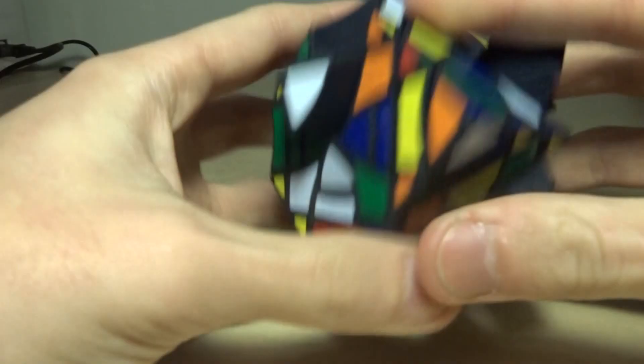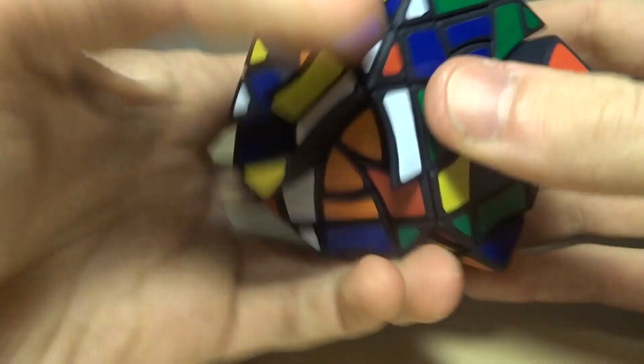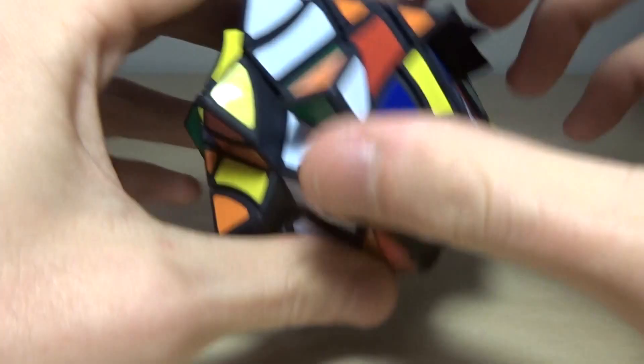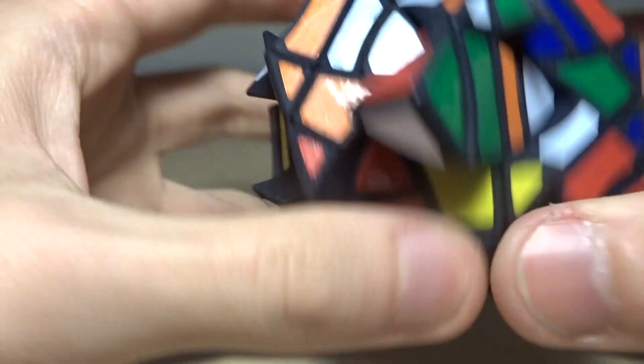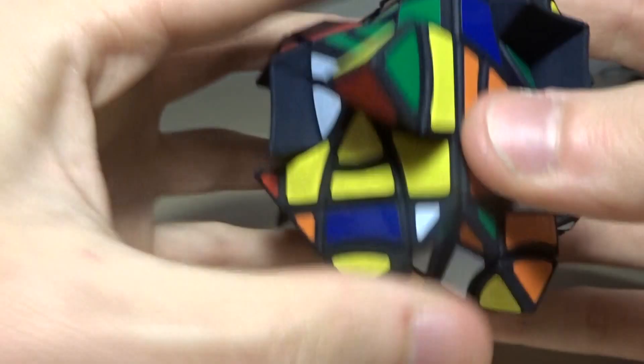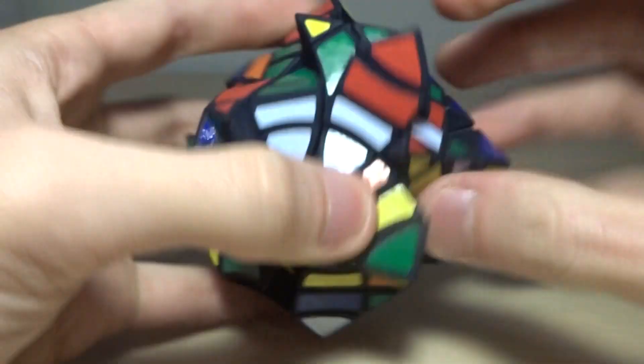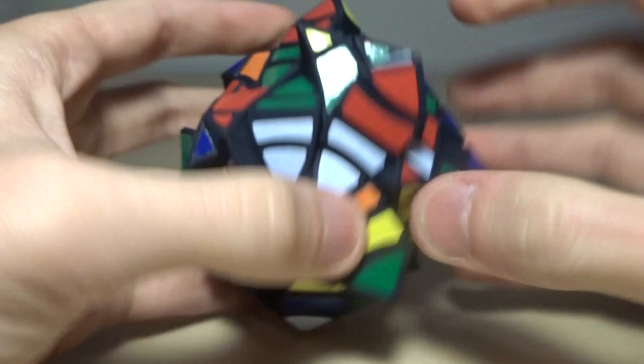And sometimes, as is normal with jumbling, you get some moves that get blocked. So yeah, this is what the puzzle looks like when it's been thoroughly jumbled. Just like a spiky ball of jumbled mess. And yeah.